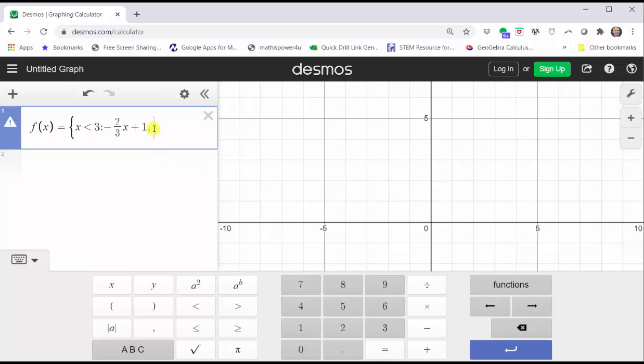Now we enter comma, the second interval, which is x greater than or equal to three, colon, and then the corresponding function rule, which is 1/2x plus 3/2. We enter one divided by two, tab or right arrow, x plus three divided by two, enter.